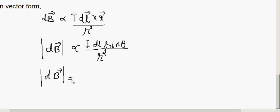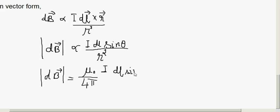This can be written as dB equals (mu-naught / 4pi) times (I dL sin(theta) / R squared). Here we have used the property of the cross product DL cross R, and the proportionality constant mu-naught over 4pi is introduced.